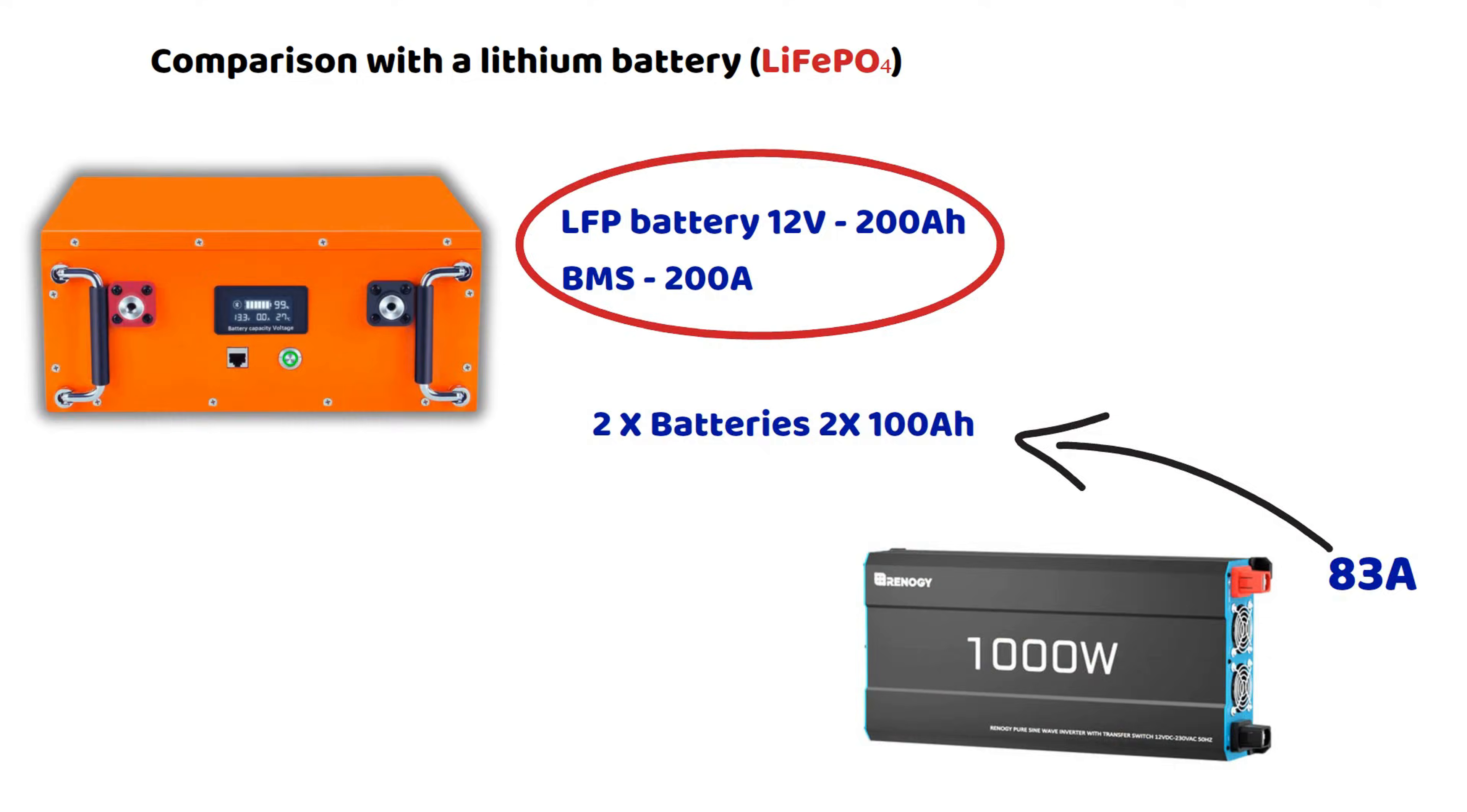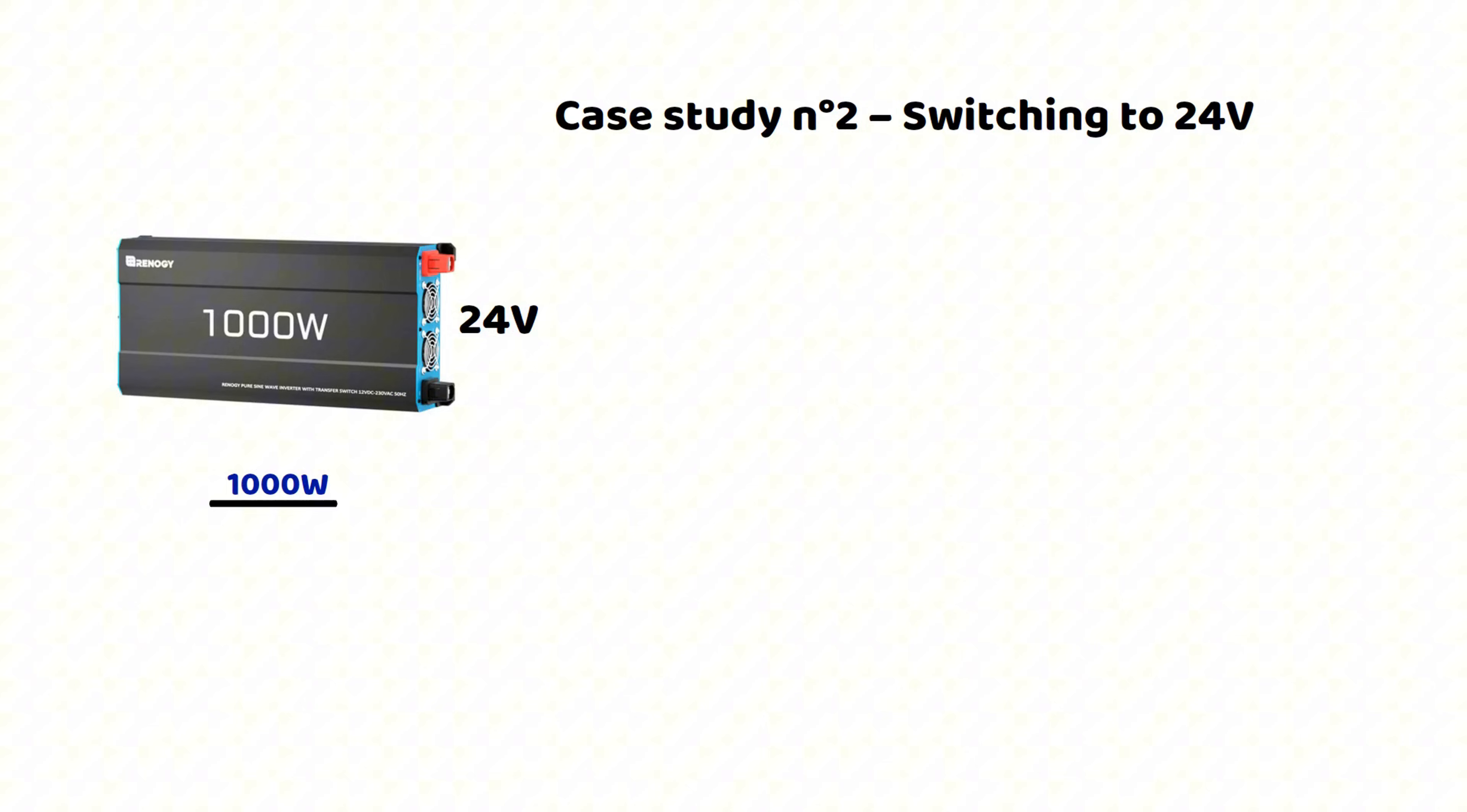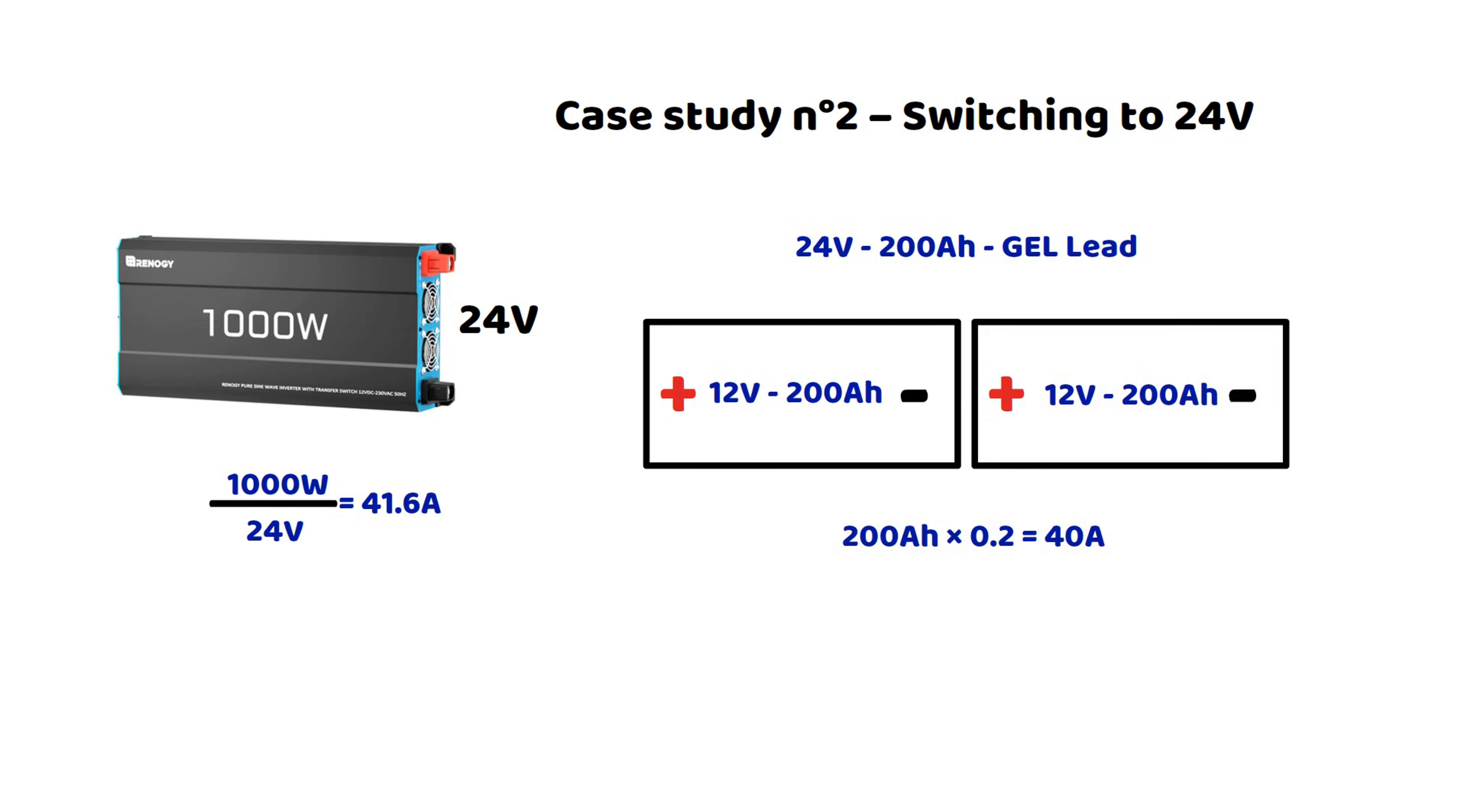So now, if we go back to this first case study, but with a 1000 watt inverter running on 24 volts, 1000 watts divided by 24 volts equals 41.6 amperes. If we take the same example of two lead acid batteries connected in series, we get a 24 volt battery with a capacity of 200 ampere hours. The recommended discharge current for lead acid: 200 ampere hours multiplied by 0.2 equals 40 amperes. In reality, it's the same.